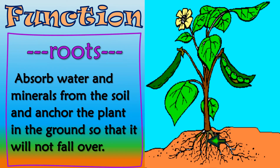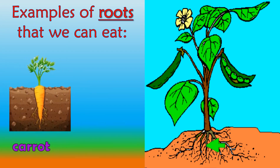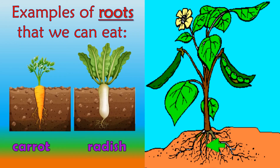Root: absorbs water and minerals from the soil and anchors the plant in the ground so that it will not fall over. Some examples of roots that we can eat are carrot and radish.